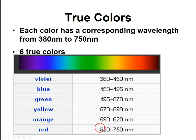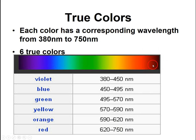So for example, if you look at red here, we are between 620 and 750 nanometers. That really represents a range of reds. And though we might call all of these red, you can clearly see some might be darker and lighter than others.